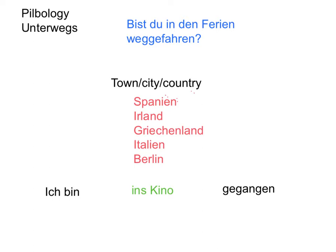Today, we are talking about: bist du in den Ferien weggefahren? Now, as some of you will know or notice, you've got a gefahren in here. Weggefahren literally means 'did you go away?' Because it's a gefahren, it requires that you don't use haben, but in fact you use sein. Which is why we've got the question: bist du in den Ferien — in the holidays — weggefahren?